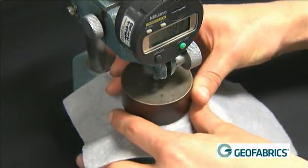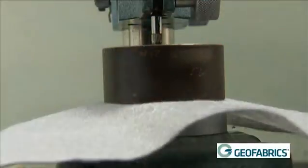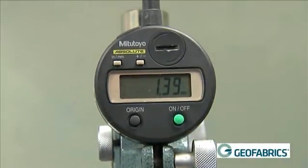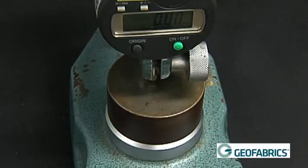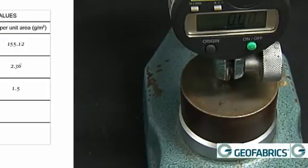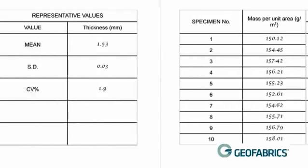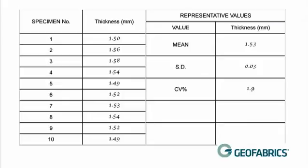For the thickness to be calculated, the specimens are placed into a thickness gauge capable of reading in millimetres to two decimal places and applying two kilopascals of pressure to the specimen. The minimum area of the presser foot is 2,000 millimetres squared. The size of the specimens must be larger than the presser foot. The mass per unit area results are presented in grams per metres squared to two decimal places. The thickness results are reported in millimetres to two decimal places.